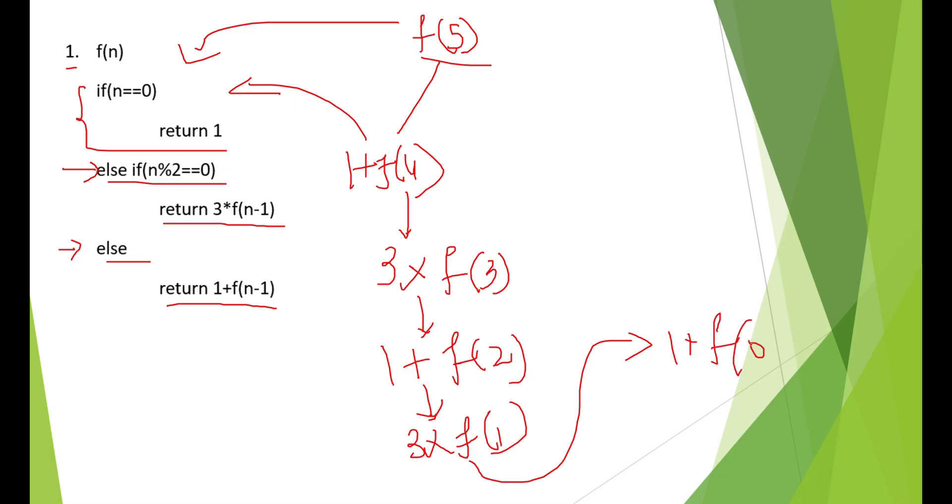We reach the base condition, that is, n is equal to 0. When n is equal to 0, we are going to return 1. Now we have to start backtracking. What is f of 0? f of 0 is 1. The value of this part will be 1 plus 1, which is nothing but 2.